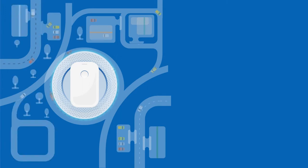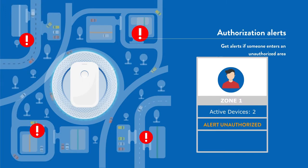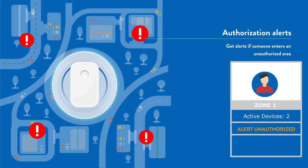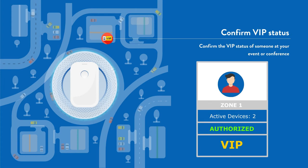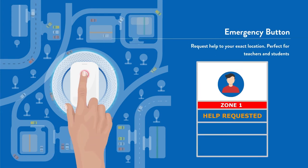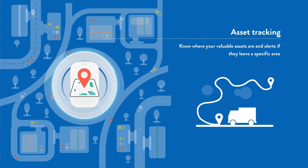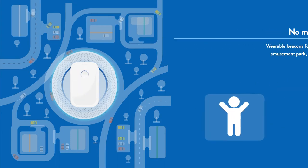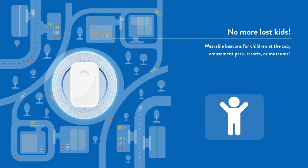Authorization alerts confirm VIP status. Emergency button, asset tracking — no more lost kids. Wearable beacons for children at the zoo, amusement park, resorts, or museums.